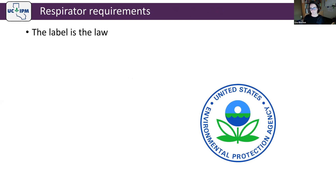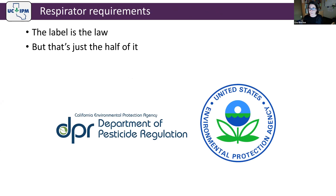The label is the law, but that's only half of it. A pesticide label is a federal document representing the minimum requirements for correct pesticide use. In California, we have additional protections and regulations, including section 6739 of title 3 — which covers respirators for pesticide use specifically. This is separate from title 8 OSHA requirements.